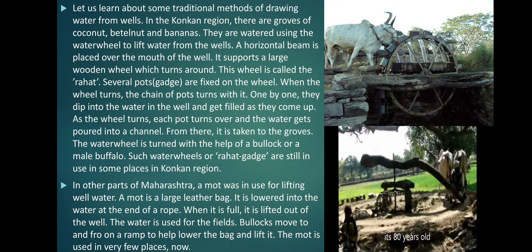In other parts of Maharashtra, a moth was in use for lifting well water. A moth is a large leather bag. It is lowered into the water at the end of a rope, and when it is full it is lifted out of the well and the water is used for the fields. Bullocks move to and fro on a ramp to help lower the bag and lift it. The moth is used in very few places now.